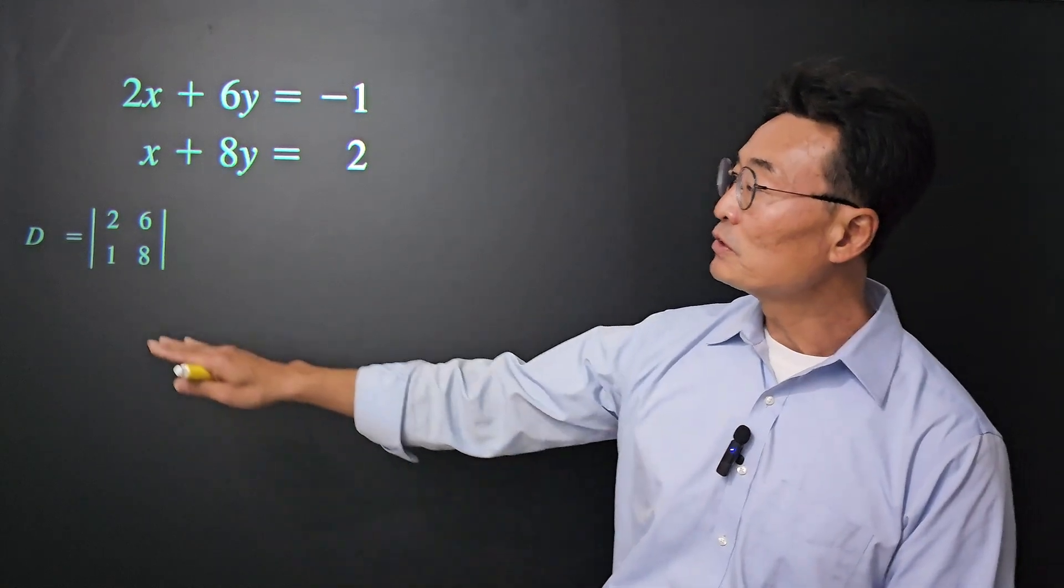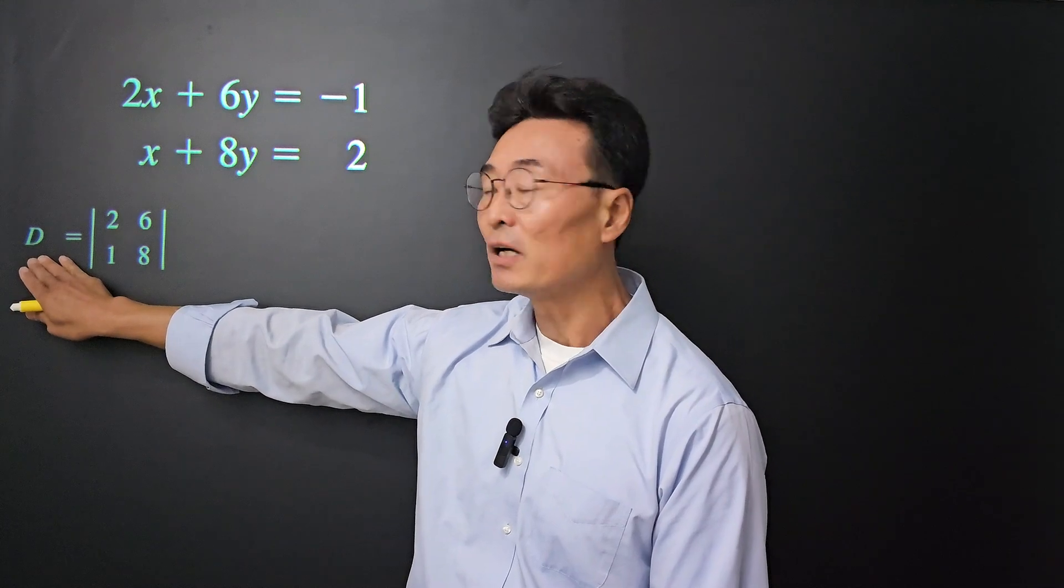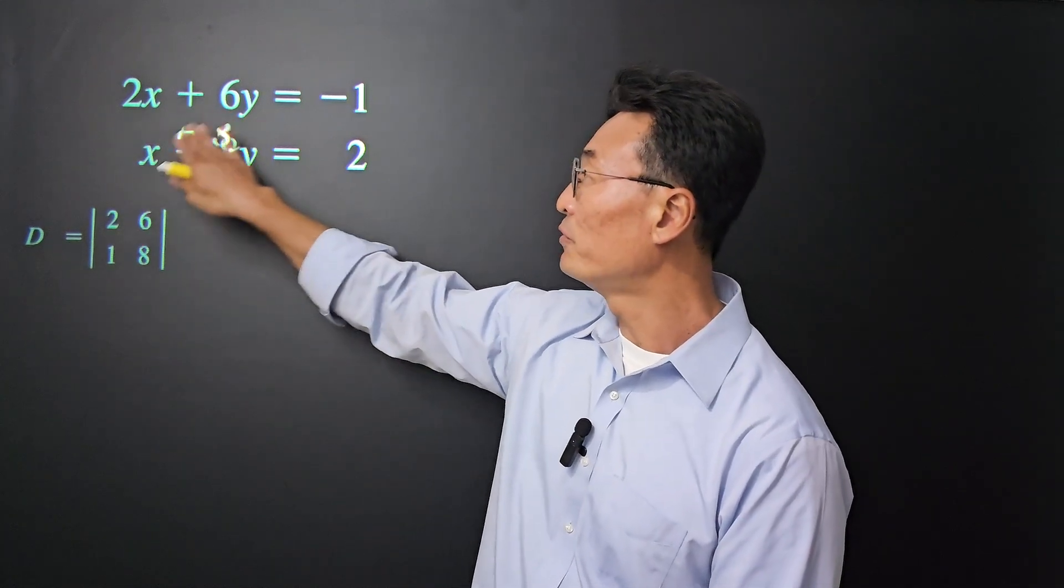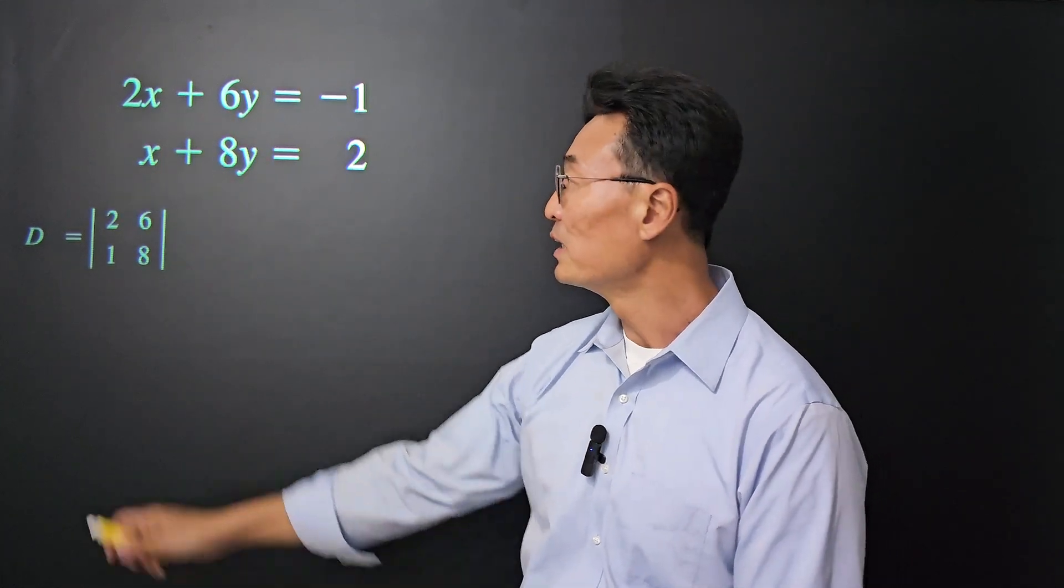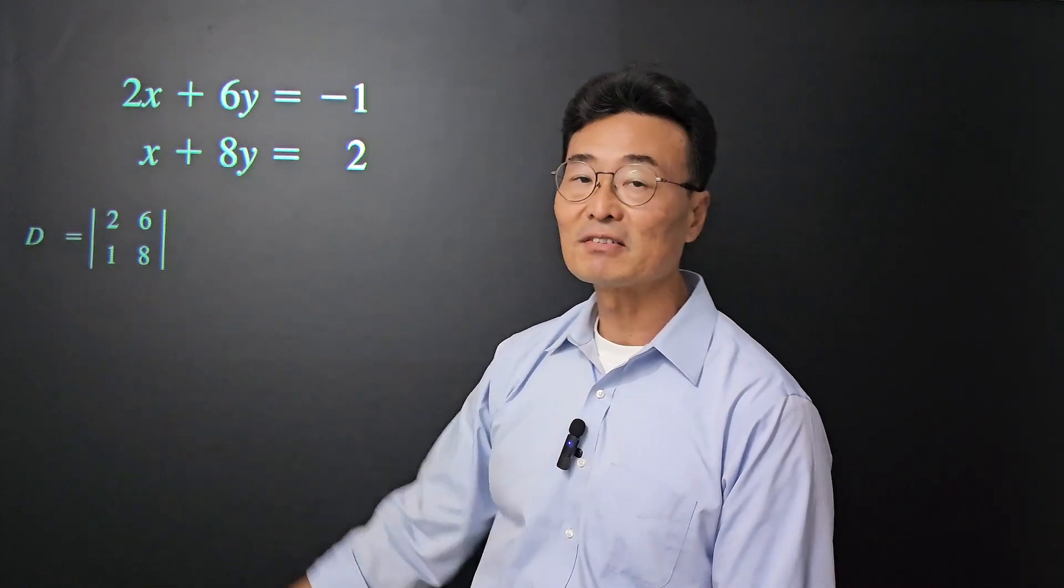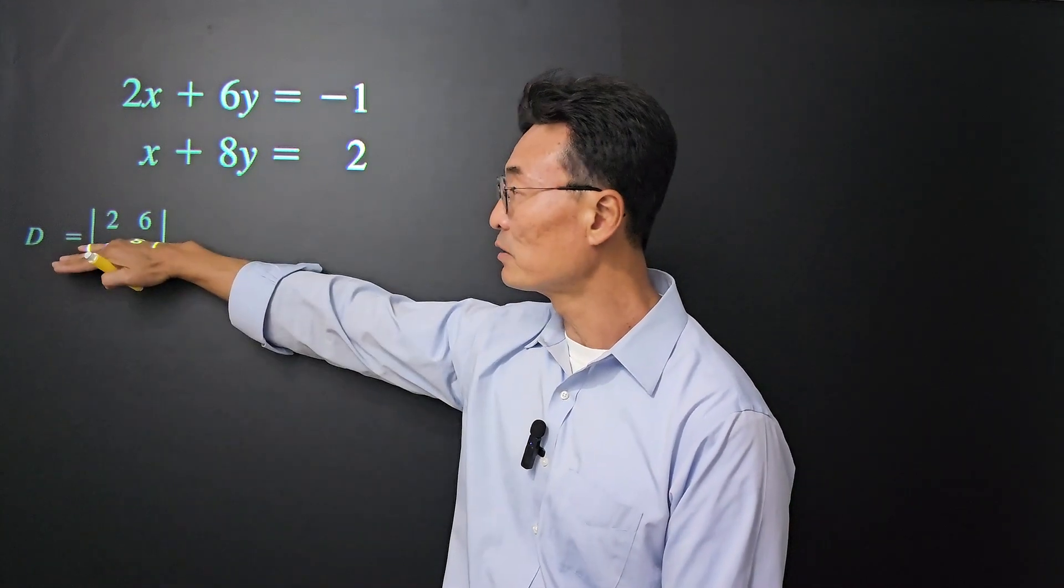To begin, we need to find the determinant of the matrix of the coefficients of the variables. We take the 2 and the 6 from the x and y of the first equation and put it in the first row.